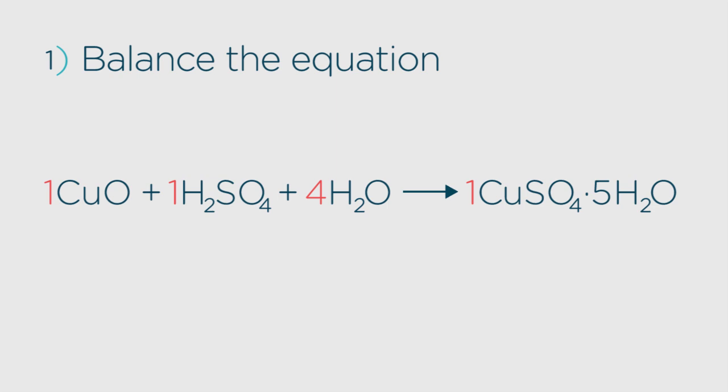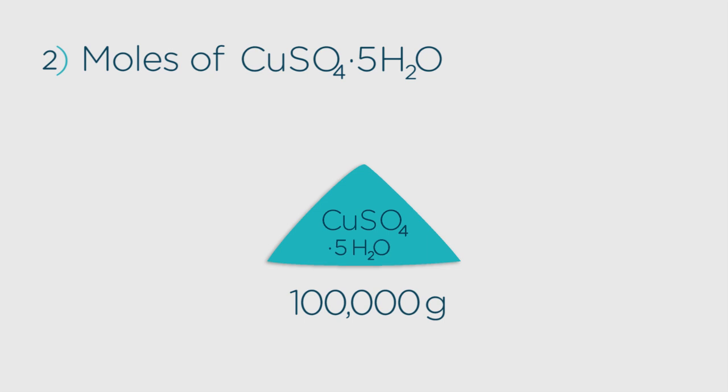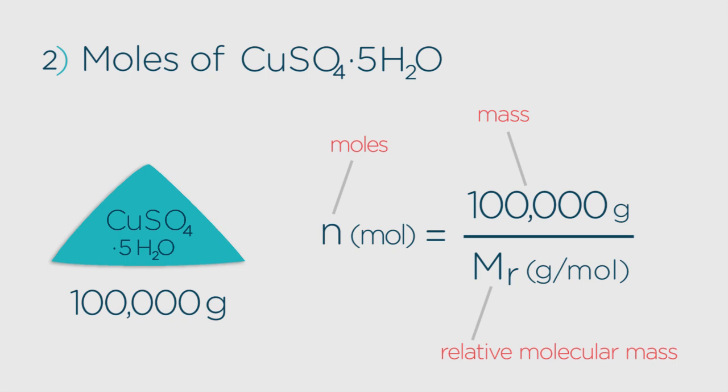You now know that every one mole of copper oxide reacts to form one mole of copper sulfate. 100 kilograms or 100,000 grams of the copper sulfate are required. We need to know how many moles of the product this represents. And here's where the equation comes in. The number of moles needed equals the desired mass, 100,000 grams, divided by the relative molecular mass of the product we want, copper sulfate.